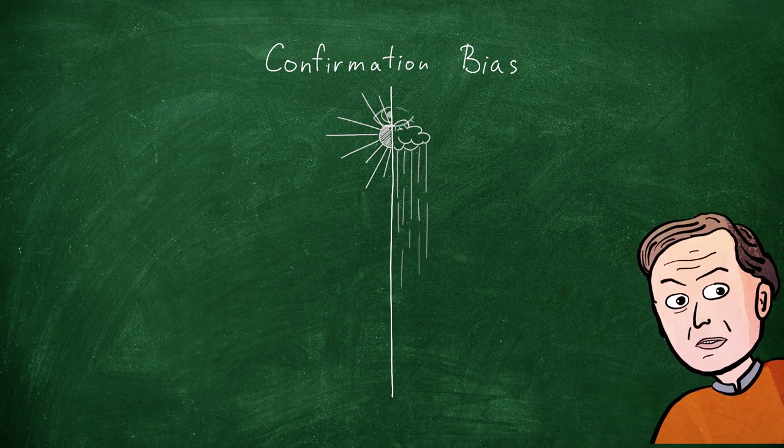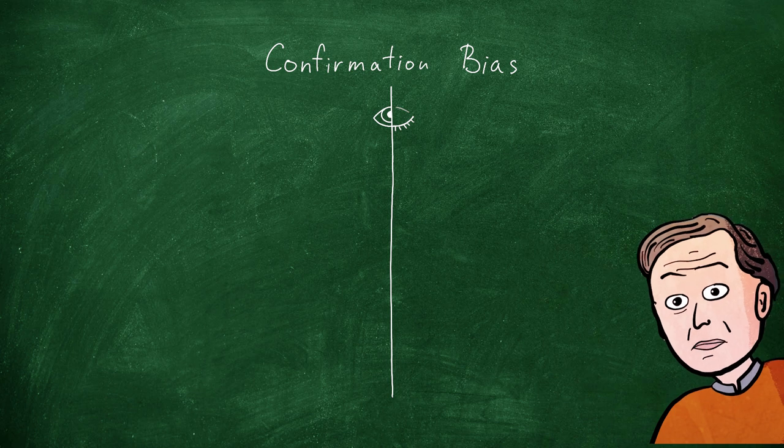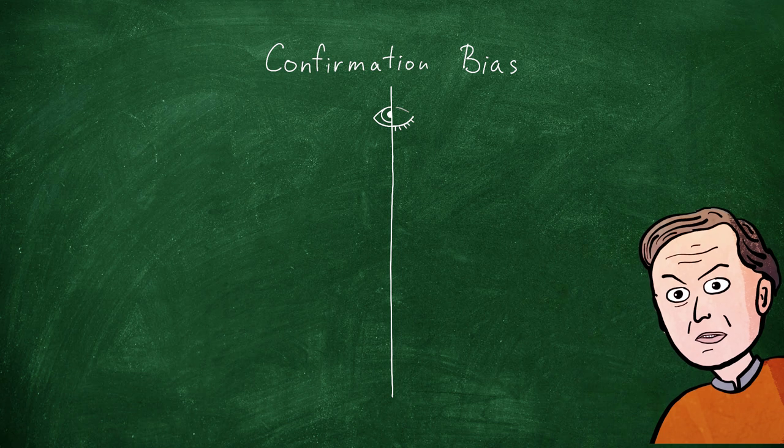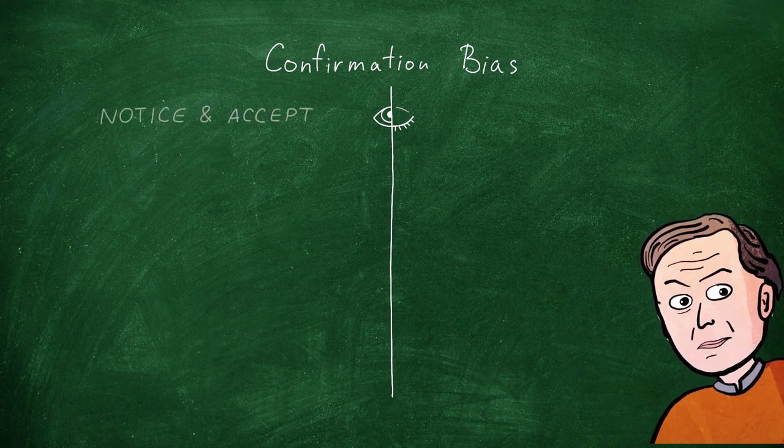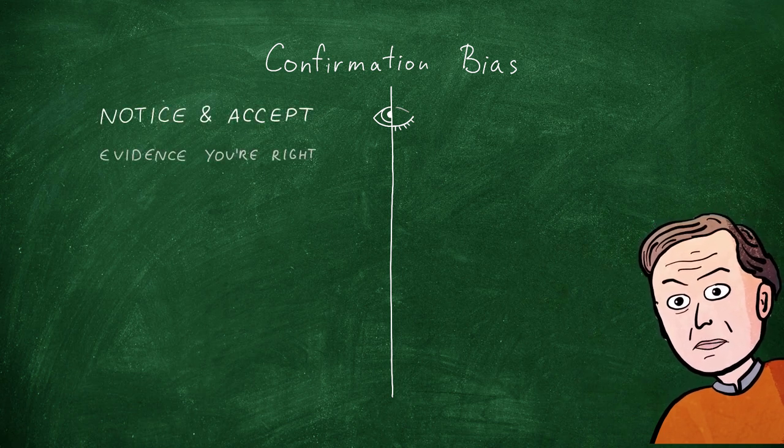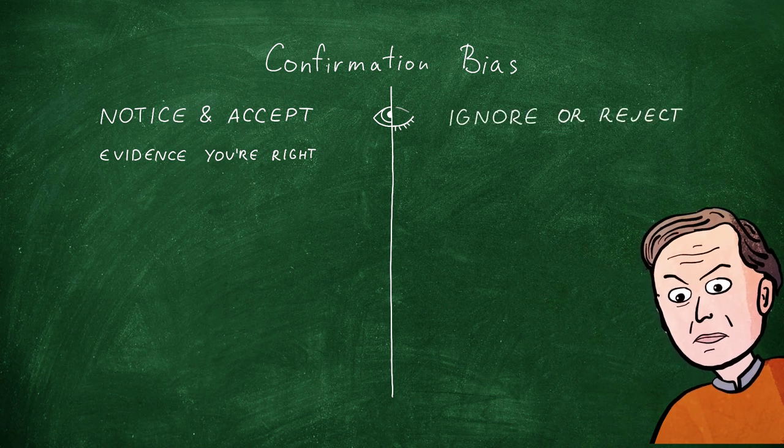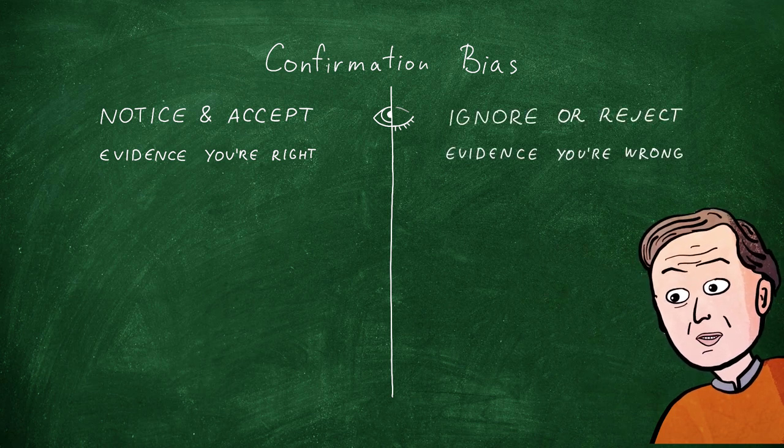Now, I assume you've heard of confirmation bias. It's the most famous of all the cognitive biases. It's this tendency, deeply embedded in the human brain apparently, to notice and accept evidence that supports your views, and to not notice, or to reject, evidence that contradicts your views.